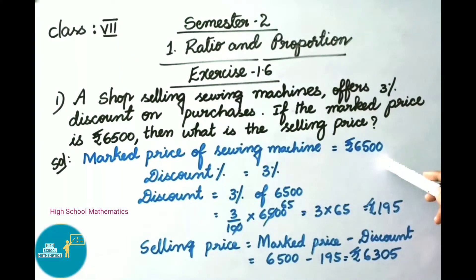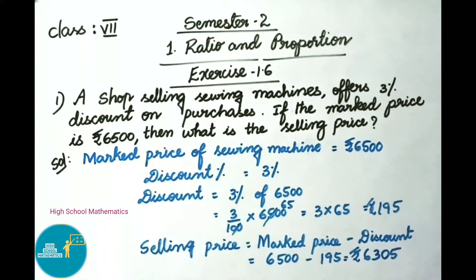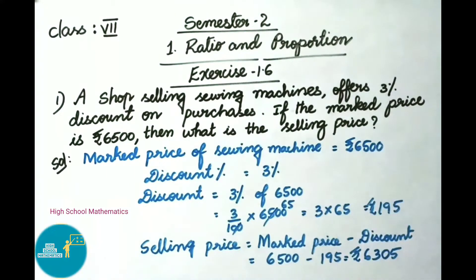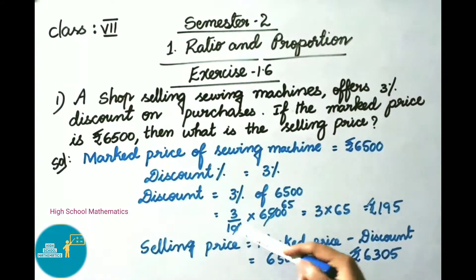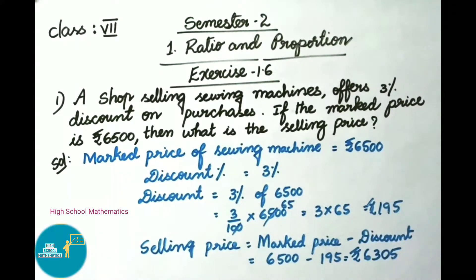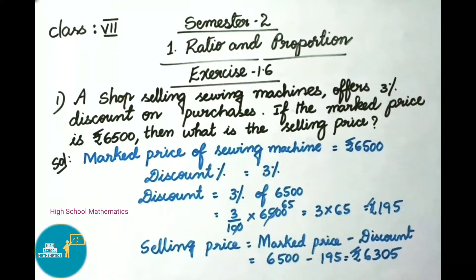Market price of sewing machine is 6500 rupees. Given discount percent is 3%. Now let us find the discount: that equals 3% of 6500, that is 3 by 100 into 6500. Multiplying the numerators, 3 into 65 equals 195 rupees. Therefore, discount on sewing machine is 195 rupees.